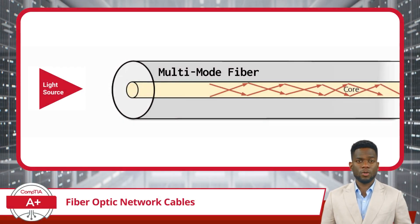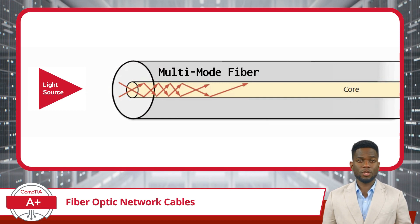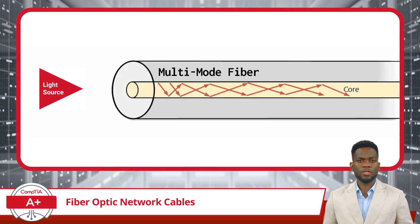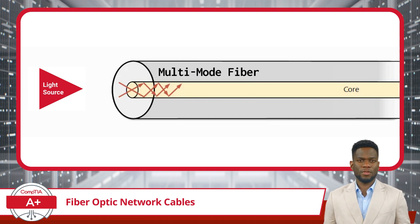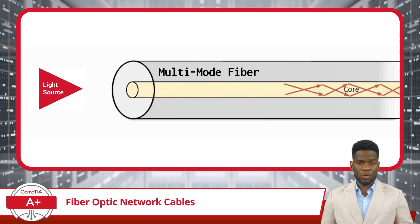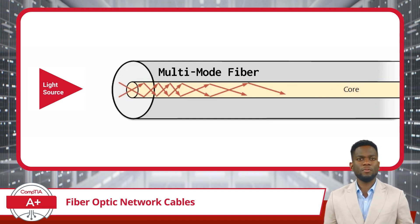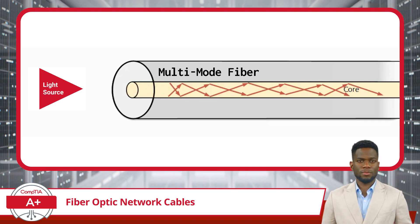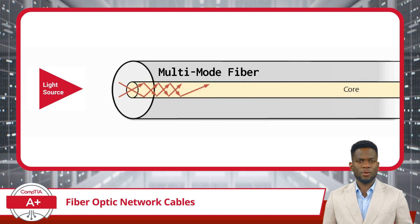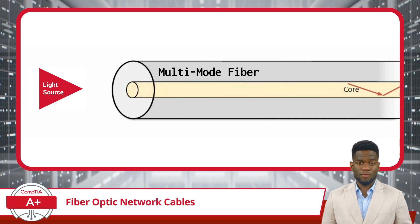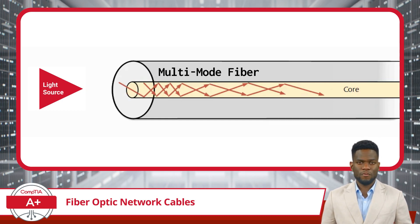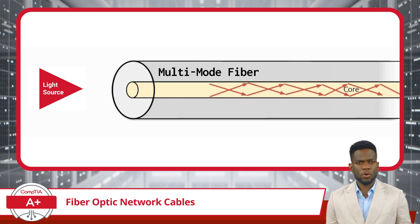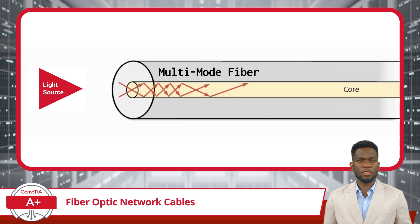On the other hand, multi-mode fiber, as the name suggests, accommodates multiple modes of light propagation simultaneously within its core. This characteristic makes it an ideal choice for short-distance transmissions, typically found within buildings or campus environments. With its larger core diameter, multi-mode fiber facilitates easier alignment of light signals, simplifying installation and making it more cost-effective for shorter distances.